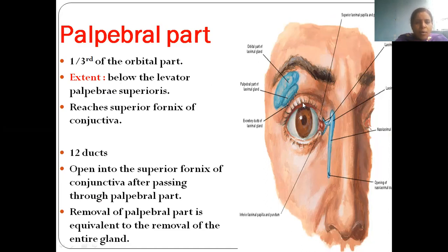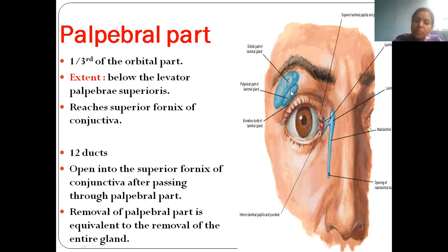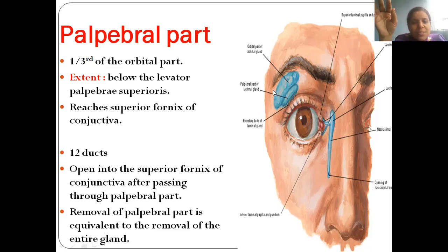The palpebral part is below the levator palpebrae superioris and reaches up to the conjunctival fornix — the superior fornix. There are around twelve lacrimal ducts opening into the superior fornix of the conjunctiva. Because the palpebral part carries these ducts, removing the palpebral part is equivalent to removing the entire gland — even if the orbital part remains, it cannot release tears without the ducts.